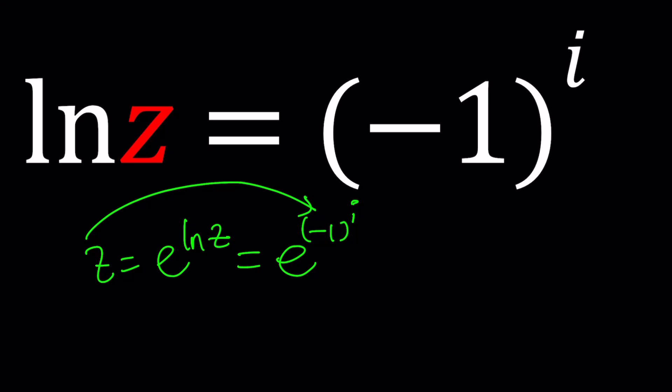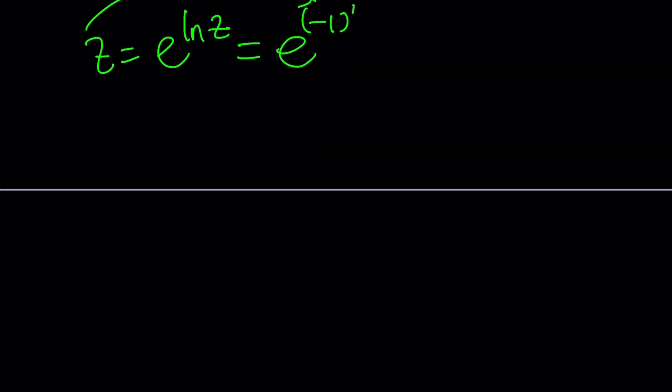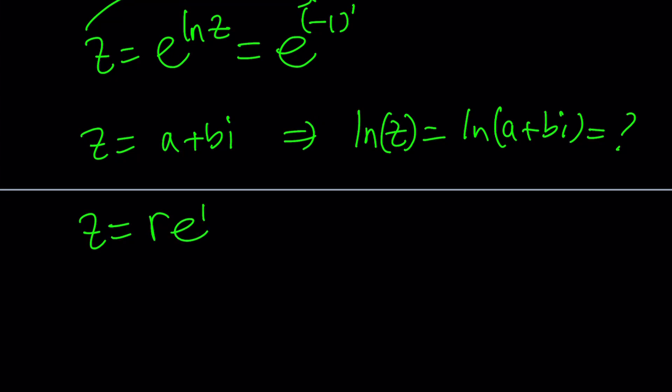I have the log of a complex number. What is the log of a complex number? If z can be written as a plus bi, which is the name of this channel, then ln of z is just going to be ln of a plus bi. But what does ln a plus bi mean? Is that clear as is? No, not really. So we need to kind of think about the polar form.